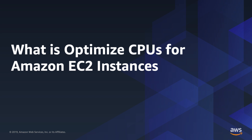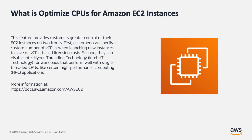Optimized CPUs for Amazon EC2 instances is a feature that provides customers greater control of their EC2 instances on two fronts. First, customers can specify a custom number of CPUs when launching new instances to save on vCPU-based licensing costs. Second, they can disable Intel hyper-threading for workloads that perform well with single-threaded CPUs, like certain high-performance computing (HPC) applications. Check docs.aws.amazon.com/awsec2 for more information.